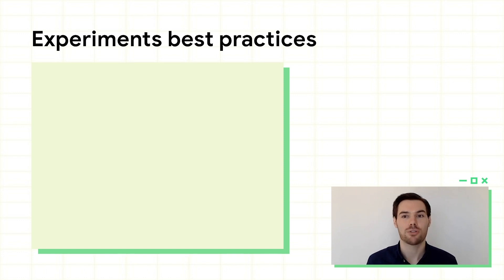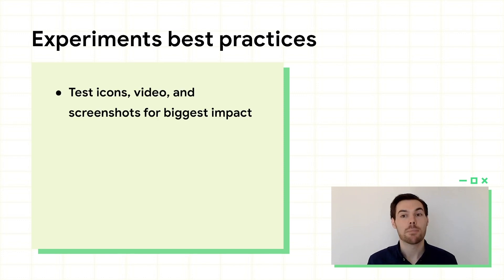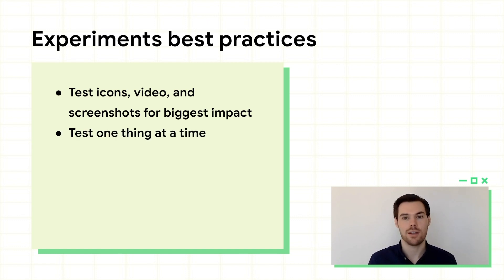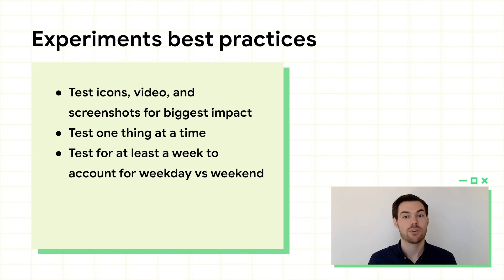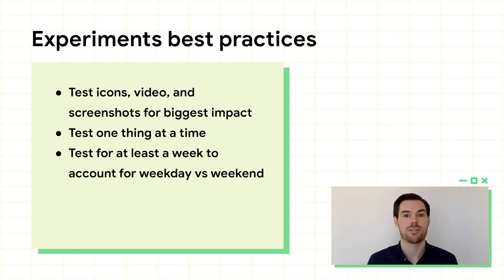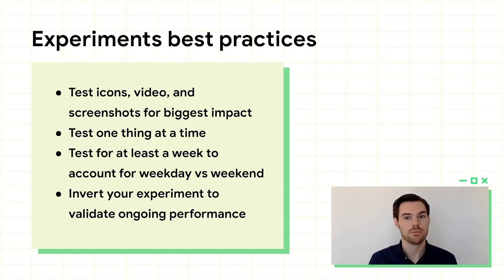There are some tips and tricks for making the most of store listing experiments in the Developer Guide — you can find a link in the video description below. For games in particular, the most prominent assets are your icons, screenshots, and videos, so consider trying these first. To get the clearest results, test just a single asset at a time. If you adjust too many things at once, you won't know what actually drove the change in acquisitions. Test for at least one full week to include weekday and weekend performance. When you have a new version that seems to be working, promote that one to be your new store listing, but keep the original as a small experiment to ensure that the new one is still performing better.